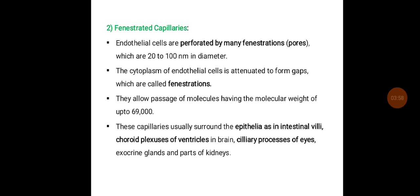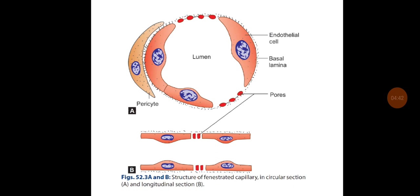Fenestrated capillaries are perforated by many fenestrations, called pores, with a diameter of around 200 nanometers. The cytoplasm of endothelial cells is attenuated to form gaps called fenestrations. They can allow the passage of molecules having a molecular weight of around 69,000 daltons. These capillaries are usually found surrounding epithelia, as in the intestinal villi, choroid plexus of the ventricles in the brain, ciliary process of the eyes, exocrine glands, and parts of the kidney.